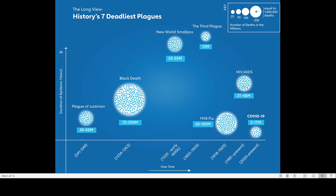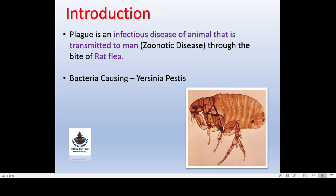You can see over here a diagram — a graph of how many deaths occurred during the different plague epidemics. During the Justinian plague it was around 30 to 50 million. The black death, which is the most famous, was around 75 to 200 million. The third pandemic was about 12 million.